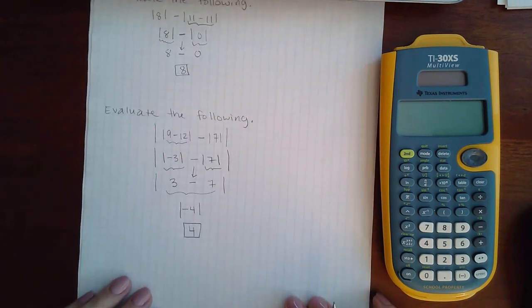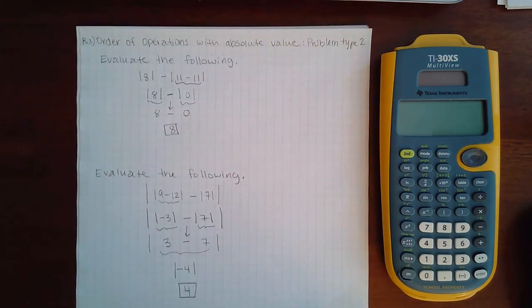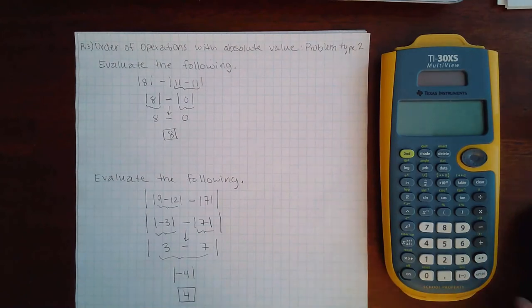So that one is very tricky. Be very careful. But that's the order of operations with absolute value problem type 2.